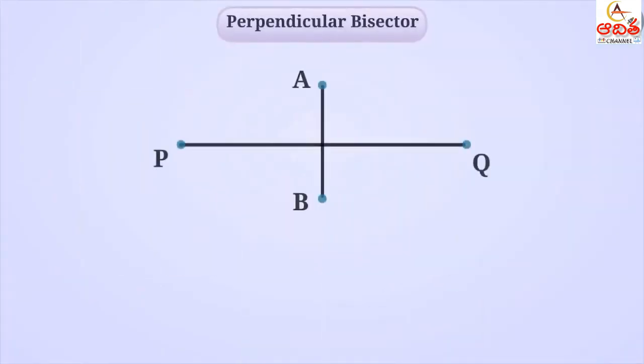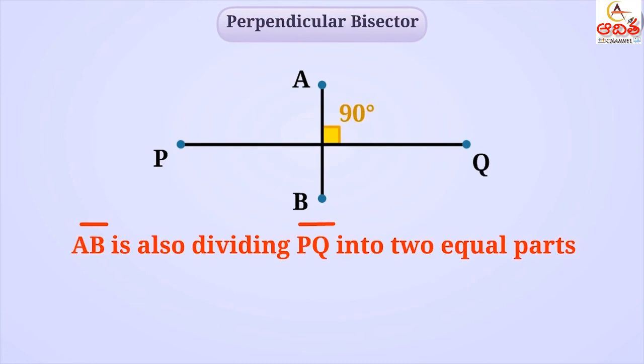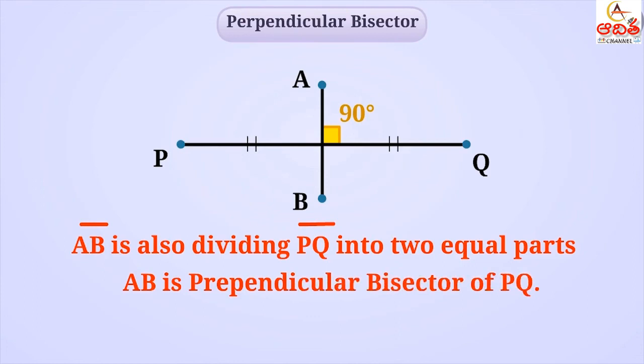Consider the line segment AB is perpendicular to line segment PQ and along with this it is dividing line segment into two equal parts. In such situations, we say that line segment AB is perpendicular bisector of the line segment PQ.